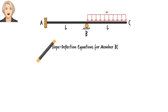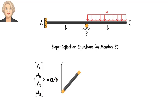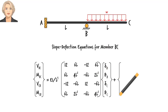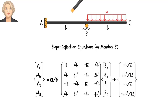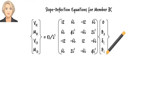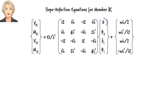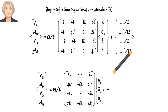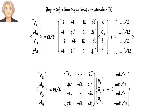For member BC, we can write the matrix equations. Since delta_B, the vertical displacement at B, equals zero, we can rewrite the equations by replacing delta_B with zero. Rewriting in compact form, we achieve this by removing the zero from the force vector and removing the coefficients of delta_B from the stiffness matrix.